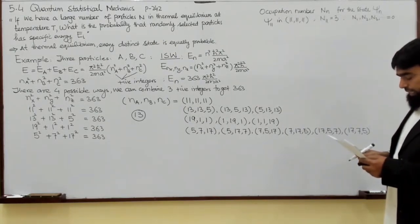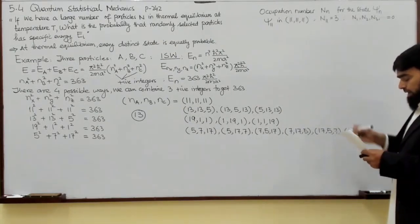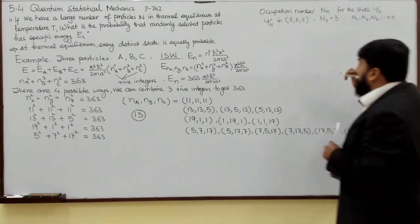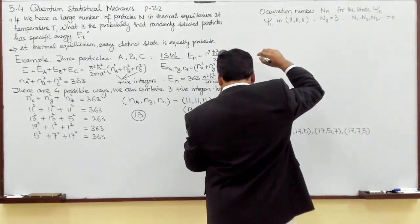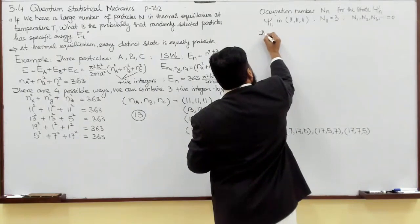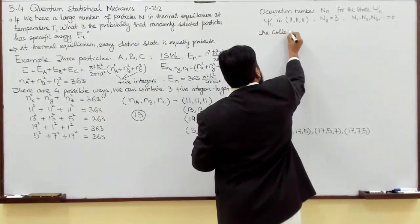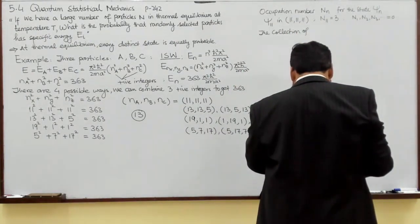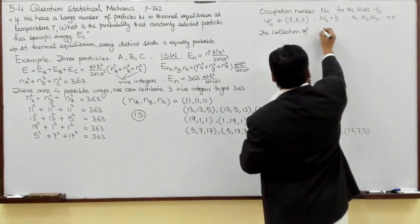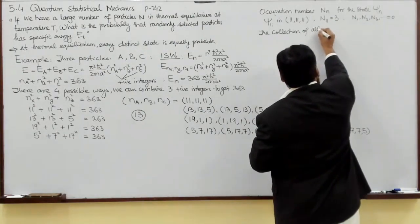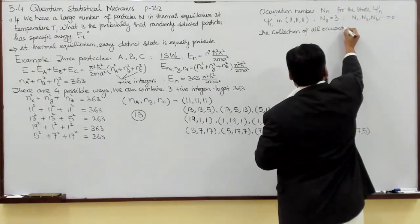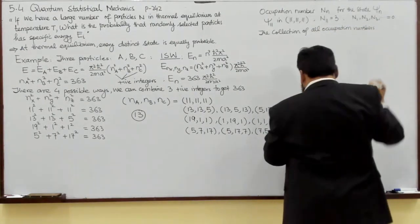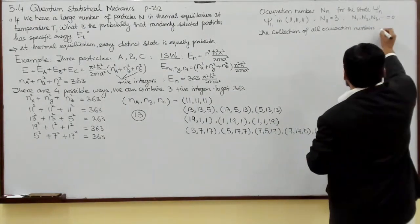The collection of all occupation numbers for a three-particle state is called a configuration. So the occupation numbers together — specifying how many particles are in each state — define the configuration of the system.